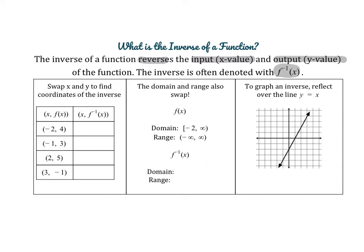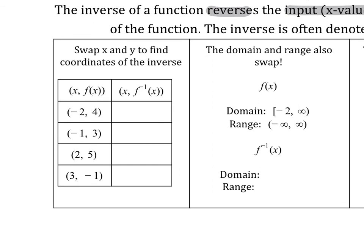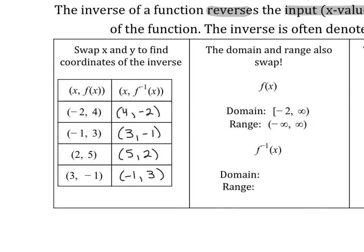All of the x and y values are literally just swapped. If you have a t-chart with coordinates from your original function, you can find the coordinates of the inverse function by simply switching x and y. So if those are the coordinates of your original function, f inverse of x would have coordinates like (4, −2), (3, −1), (5, 2), and (−1, 3) — the x and y are literally just swapped.